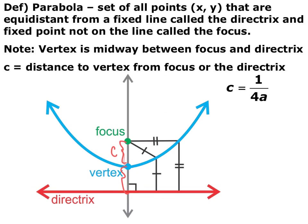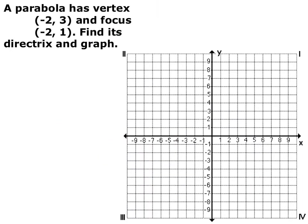For an up or down facing parabola, your directrix is always going to be a horizontal line, so the equation is always going to be y equals some number. We're given a parabola that has a vertex at (-2, 3) and a focus at (-2, 1), and we want to find its directrix and graph.